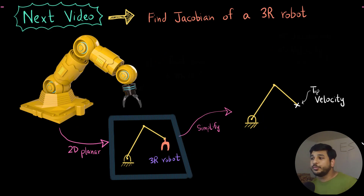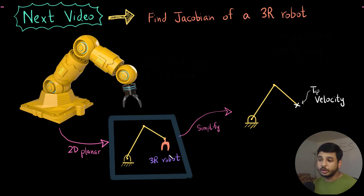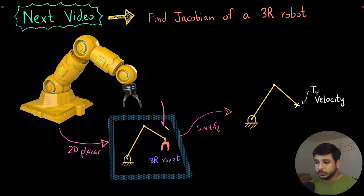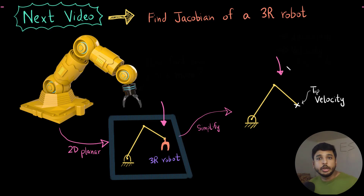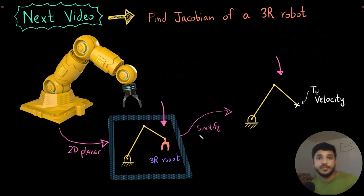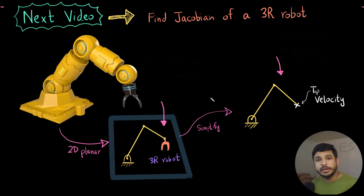In the next video we are going to find the Jacobian of a 3R robot. If you remember, in the first part we started with a fancy robot, converted it to a 2D printer robot, then simplified to a 3R robot, and simplified further to arrive at the 2R robot we've been working with. Next time we go a step back to the 3R robot with a revolute joint end-effector — and as a hint, its Jacobian will be a 3×3 matrix.